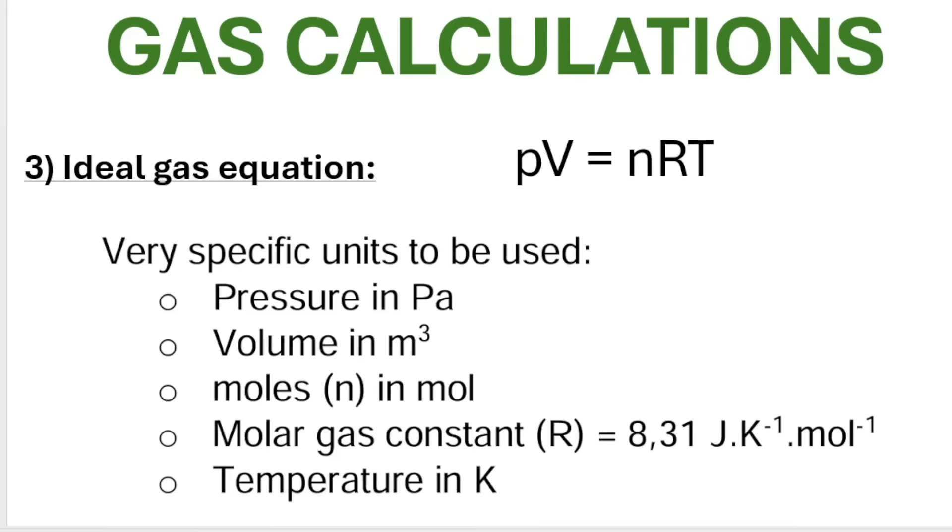Then you get the ideal gas equation, PV equals NRT. Now this is a very important thing to note. Very specific units need to be used for this formula. So you cannot use pressure in any of the units that you choose. It has to be in pascals.